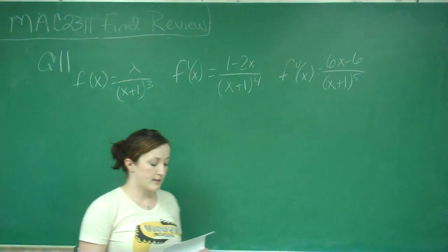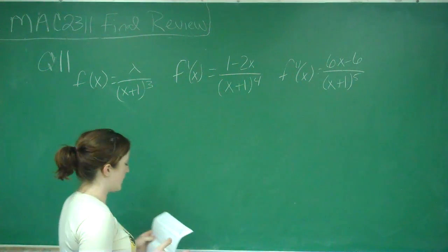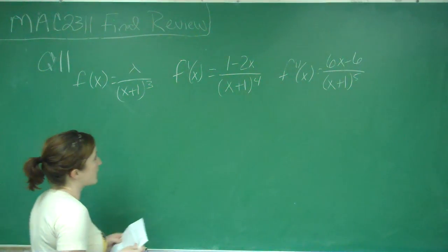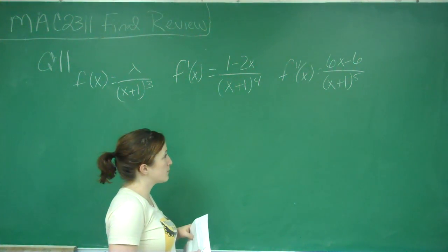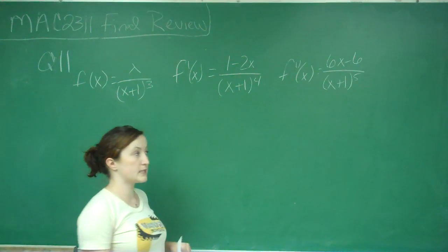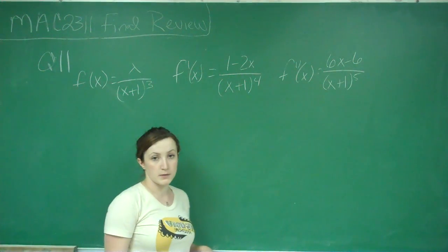This is question number 11, and it says, let f of x equal x over x plus 1 cubed, f prime of x equal 1 minus 2x over x plus 1 to the 4th, and f double prime equals 6x minus 6 over x plus 1 to the 5th.